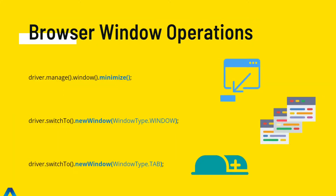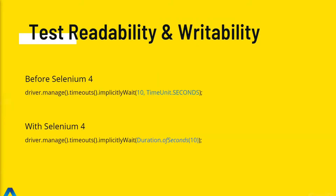Here are some other things we can do with Selenium 4. With older versions we could maximize the window or make it full screen, but now we can also minimize the window by calling window.minimize. We can open a new window by calling switchTo with window type set to window, or open a new tab by specifying tab as the window type. Also, tests are going to be easier to read and write. For instance, before Selenium 4 we declared an implicit wait specifying seconds using TimeUnit.SECONDS. With Selenium 4, we use the Duration object and call Duration.ofSeconds.